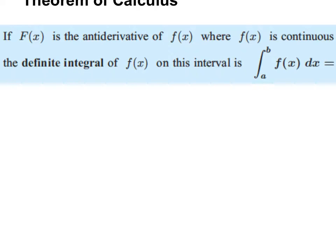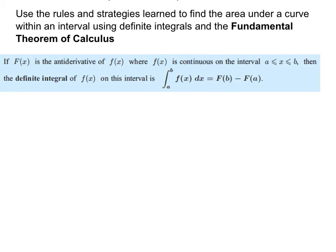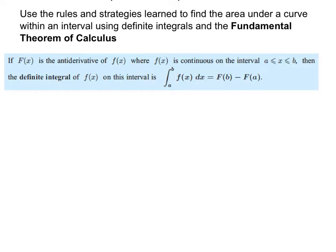If capital F of X is the anti-derivative of F of X, where F of X is continuous on the interval where X is between A and B inclusive, then A is what we call the lower bound and B is the upper bound.